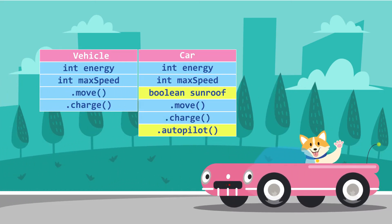A car is powered by electricity. It has a maximum speed of 200 miles per hour. It may or may not have a sunroof. It can move, needs charging, and can be put on autopilot.